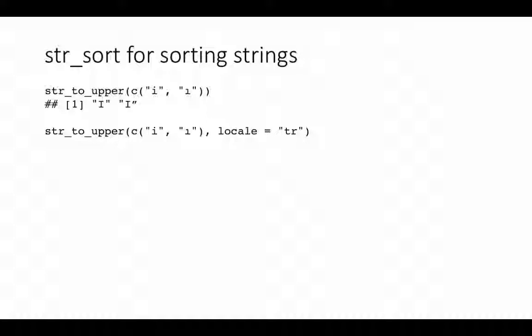Specifically, when many languages use the same script but in different ways, it matters. For example, Turkish was originally written in a different script — I think it was Arabic-like — but during the Turkish Revolution, they adopted the English script to represent Turkish. So whenever you perform string operations, they have to be cognizant of the actual language, because the rules may differ. If you want to indicate the language specifically, you can set the locale argument — here TR stands for Turkish.